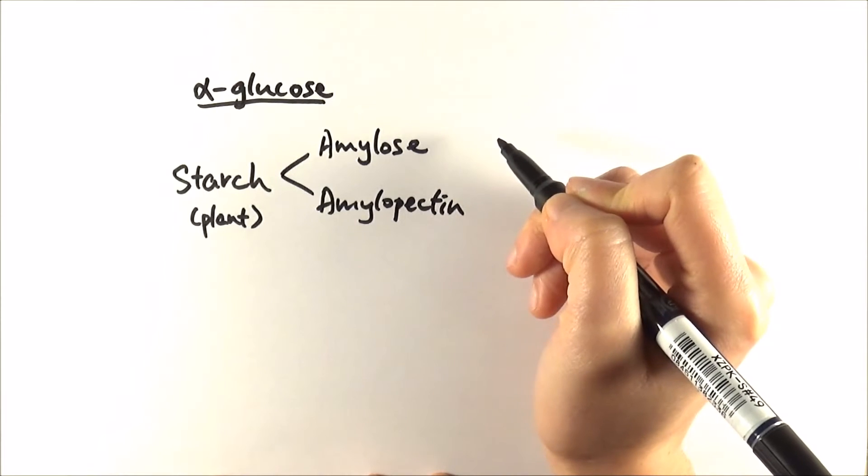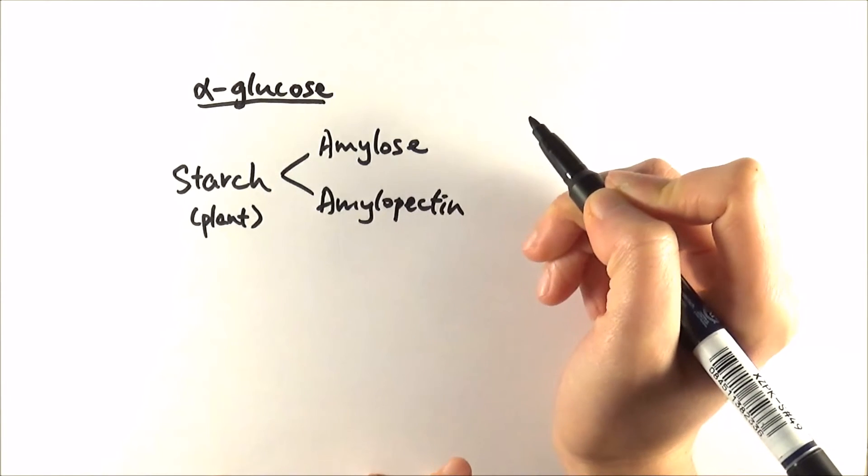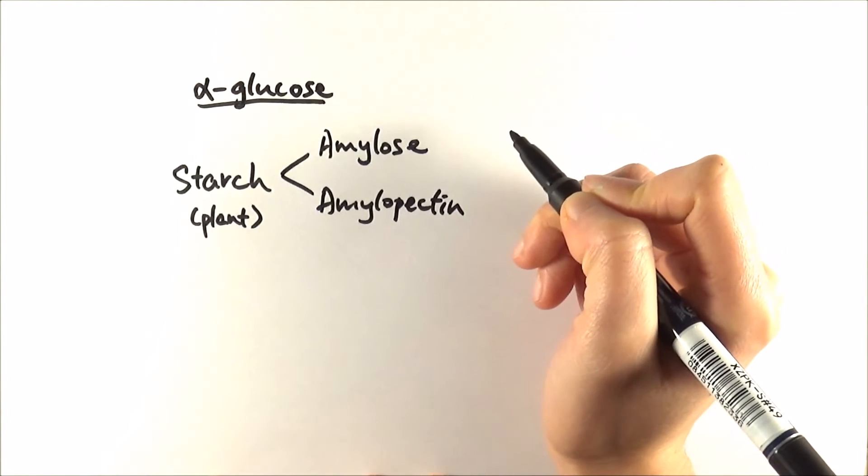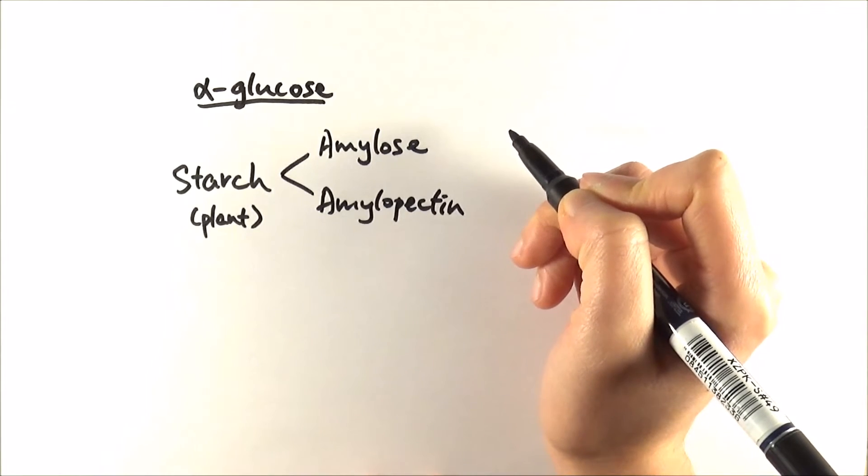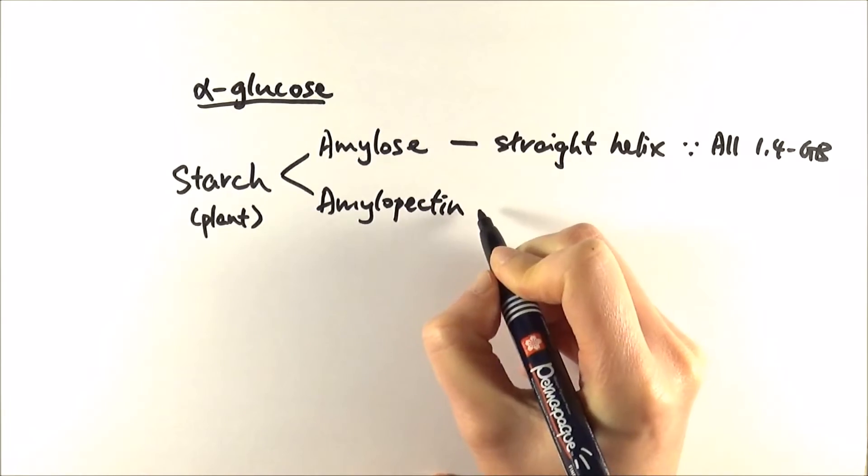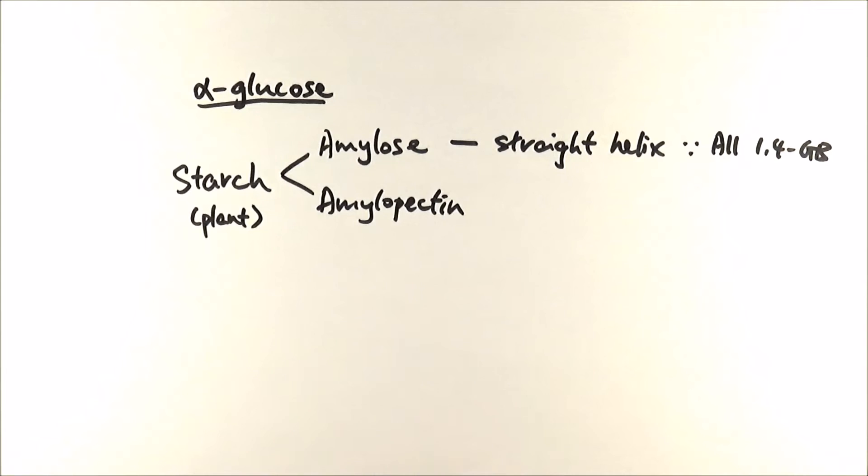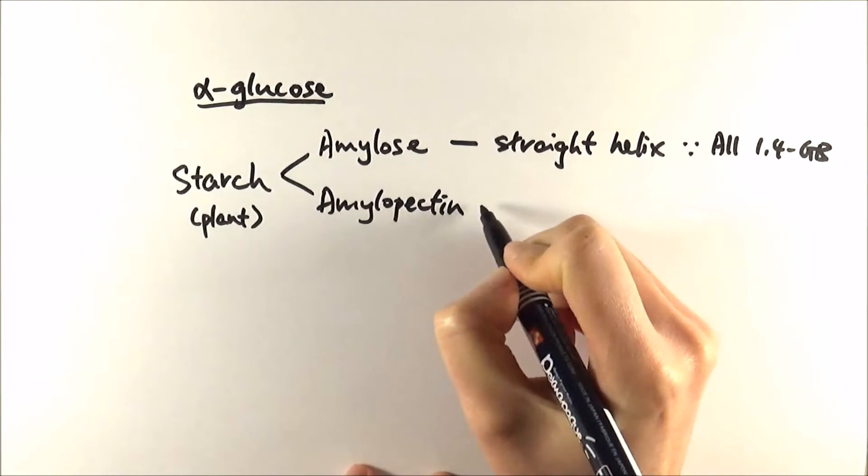Amylose is a straight chain molecule and as we said in the previous video, if it's a straight chain it means it's all made up of 1,4 glycosidic bonds. Whereas amylopectin is slightly different. It's a mixture of 1,4 and 1,6 glycosidic bonds and hence makes a branched structure.